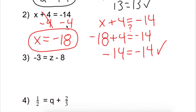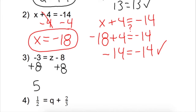Next: negative 3 is equal to z minus 8. We want to get z by itself. What's happening on the side with z? We're subtracting 8. The opposite of subtracting 8 is adding 8, and whatever we do on one side of the equal sign, we also have to do on the other side. So negative 3 plus 8 leaves us with 5. Negative 8 plus 8 is 0, so we have 5 is equal to z.